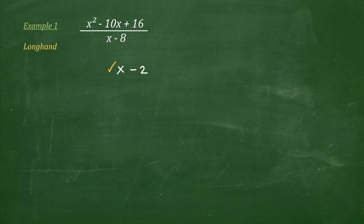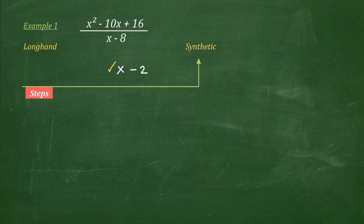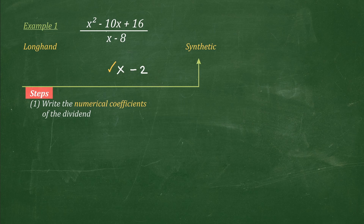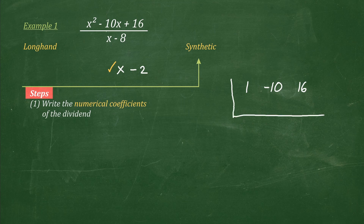Let's try to solve the same problem using synthetic division. Here are the steps. Number one: write on a row the numerical coefficients of the dividend inside an upside-down division symbol. In this case, we have the numerical coefficients 1, followed by negative 10, and then positive 16 — just the numerical coefficients inside an inverted division symbol, like so.